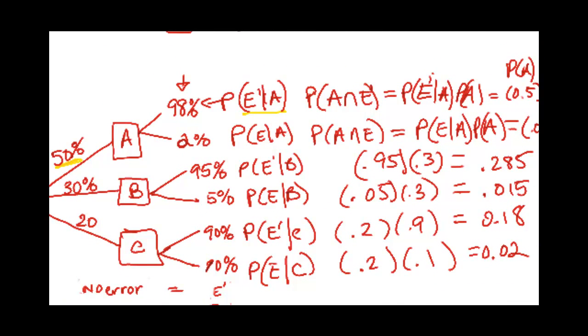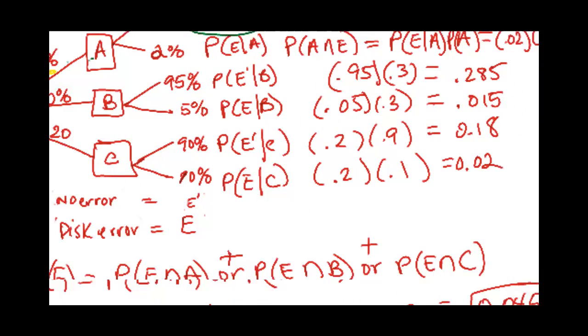Like, for instance, this is the probability of an error given that it came from company A. If you want the intersection of A and that error, you multiply the two. And you do that for the whole column if you want all the intersections.